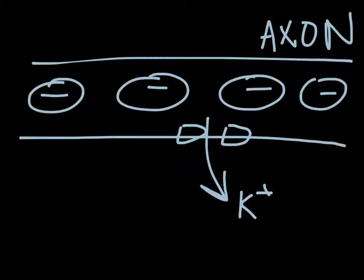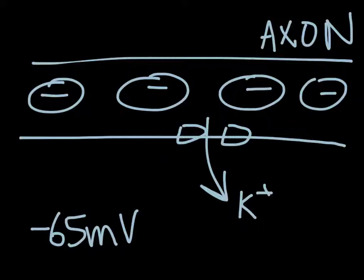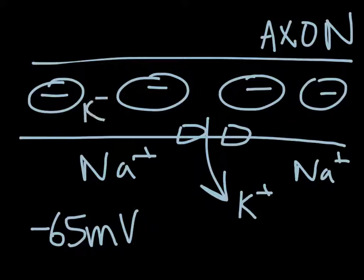The membrane potential will change back to negative 65 millivolts. Basically, everything becomes the same as it started with, with higher concentration on the inside and lower concentration on the outside.